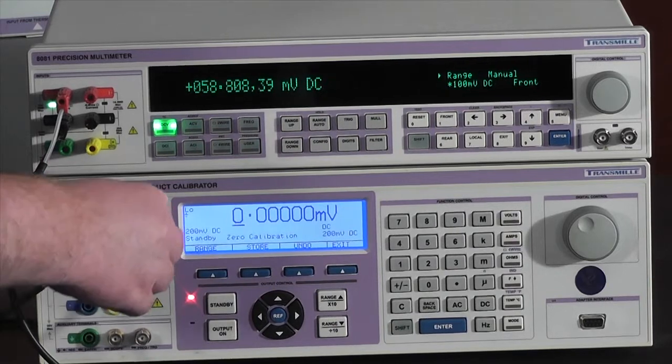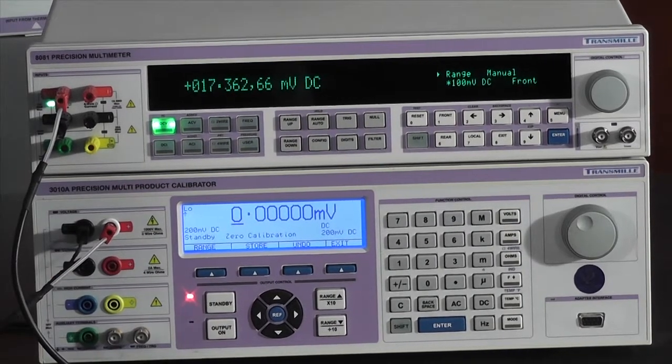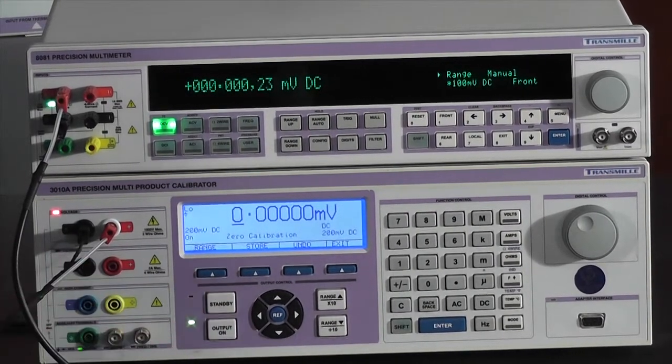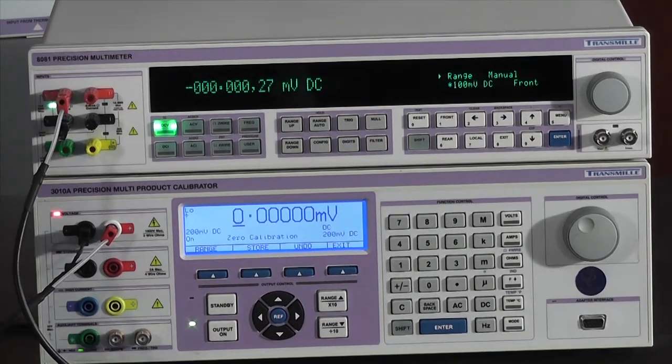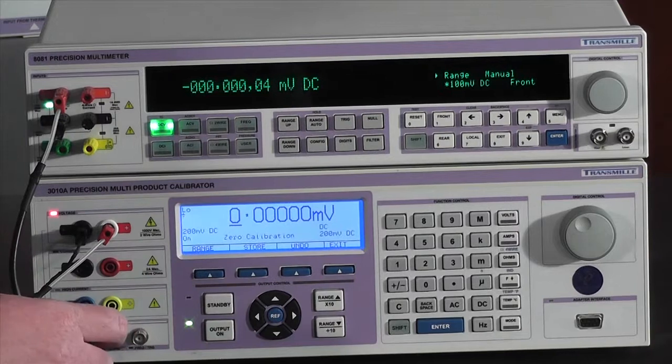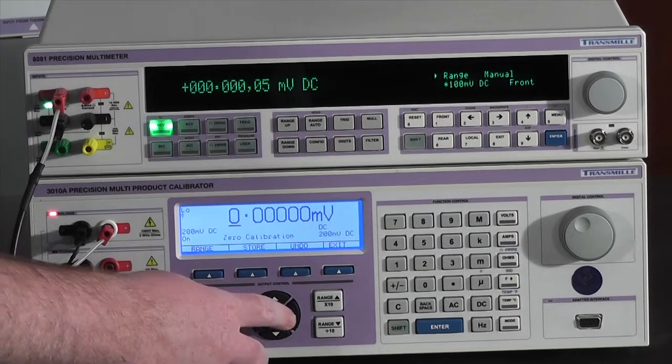Simply connect to the output of the calibrator and press output on. As we see, we have a small offset here that we can trim out.